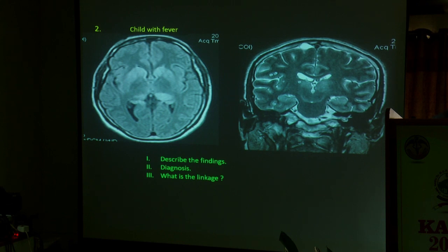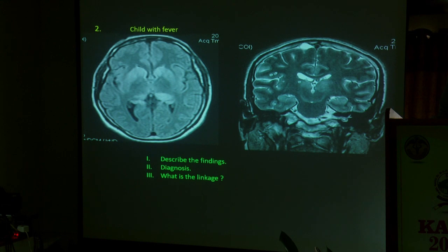Describe the findings. In this case there is no differential diagnosis — you have to give a final diagnosis. The diagnosis is Japanese encephalitis. Why am I telling Japanese encephalitis? Why not dengue, or West Nile fever or something like that?